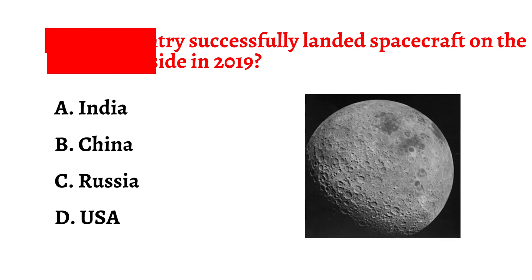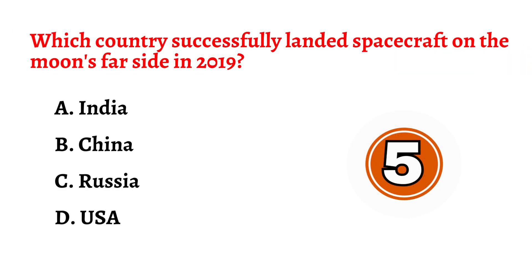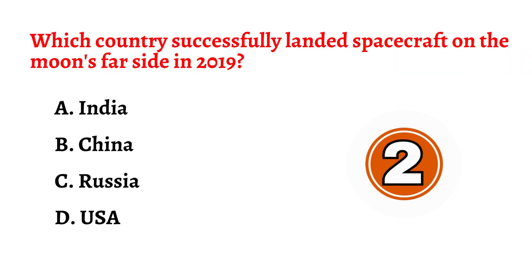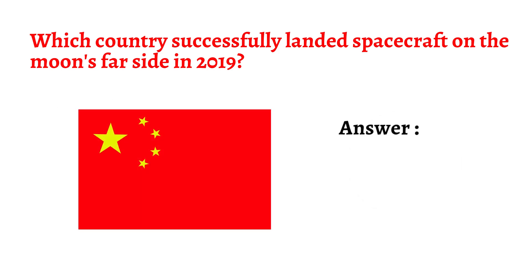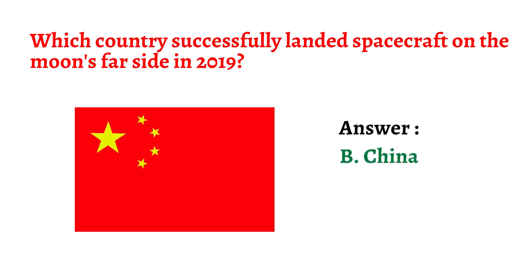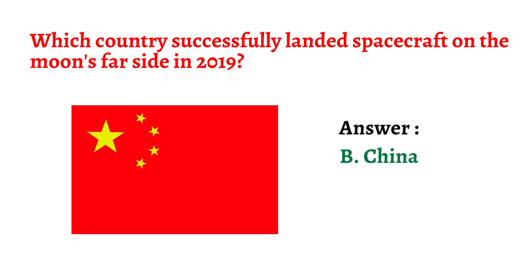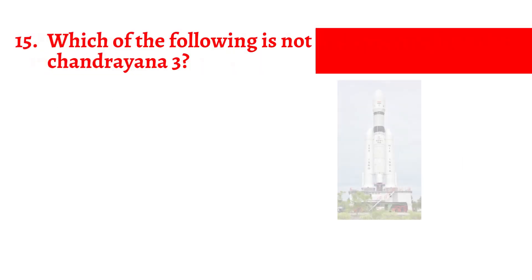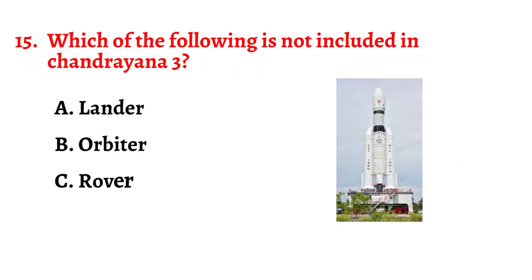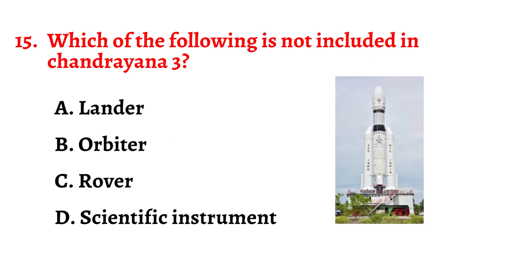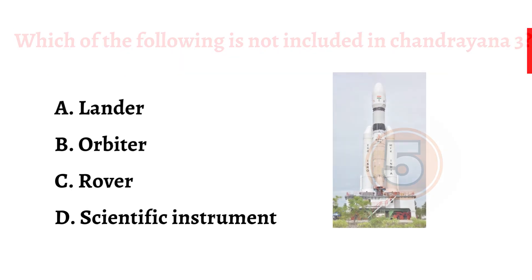Question number fourteen: Which country successfully landed a spacecraft on the Moon's far side in 2019? The correct answer is option B: China.